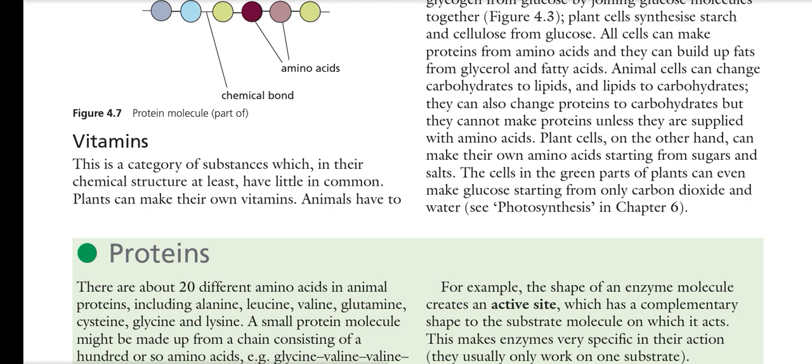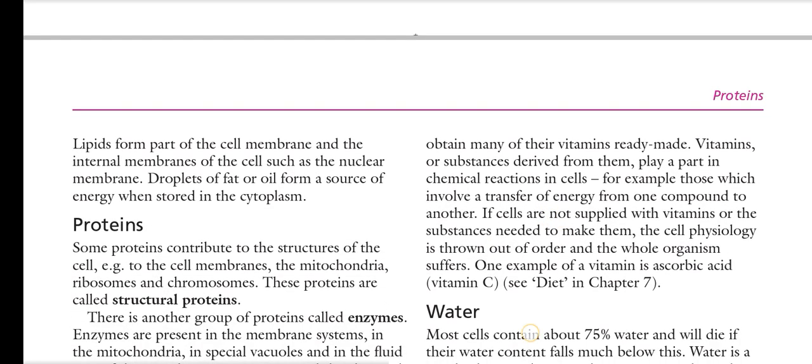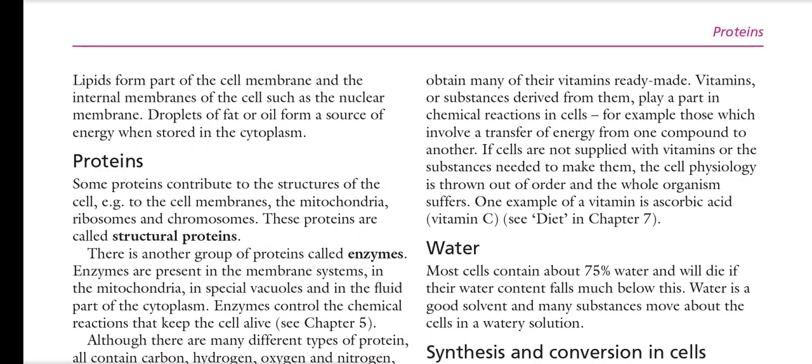Next we will discuss vitamins. Vitamins are very crucial substances that are important for living bodies. Although their chemical structures have little in common, plants can make their own vitamins while animals must obtain many of their vitamins ready-made. Vitamins play a part in chemical reactions — for example, vitamin D is very important for bone formation, and vitamin C, also known as ascorbic acid, is present in citrus fruits.